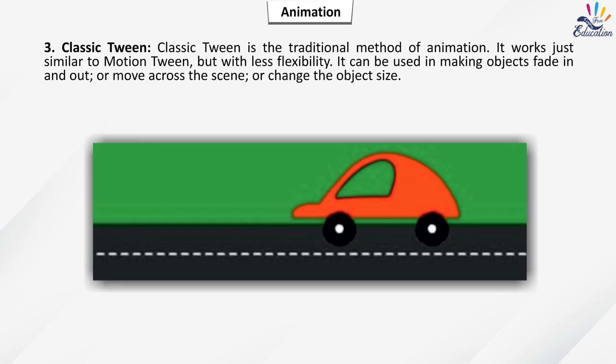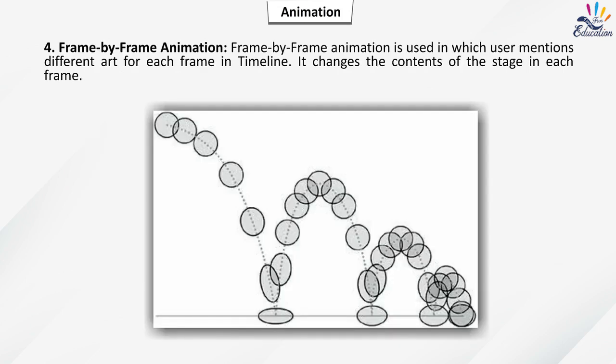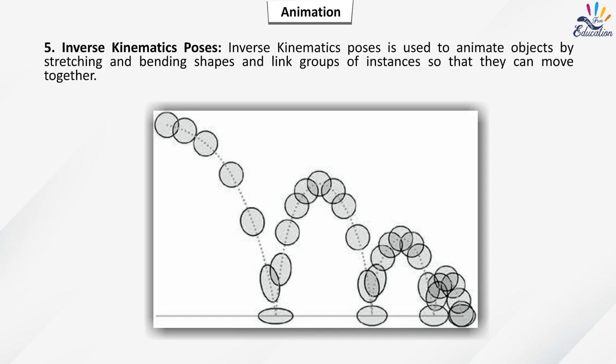Classic Tween is the traditional method of animation, working similarly to motion tween but with less flexibility. It can be used to make objects fade in and out, move across the scene, or change object size. Frame-by-Frame Animation: the user specifies different art for each frame in the timeline, changing the contents of the stage in each frame. Inverse Kinematics Poses: used to animate objects by stretching and bending shapes and linking groups of instances so they can move together.